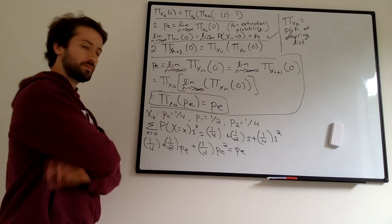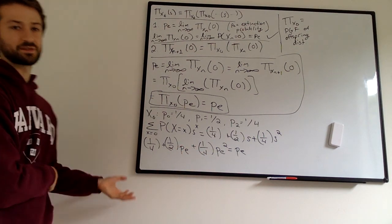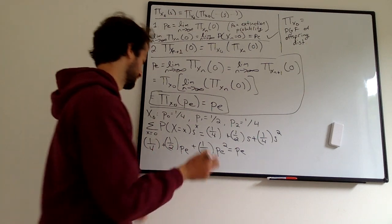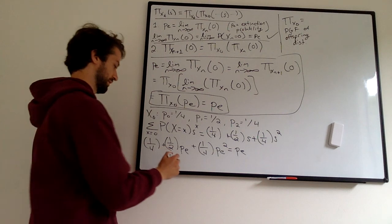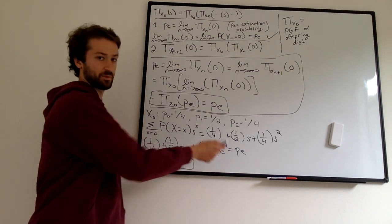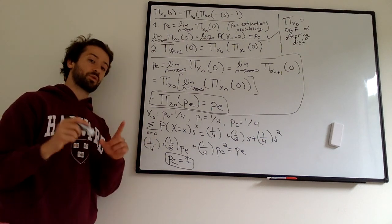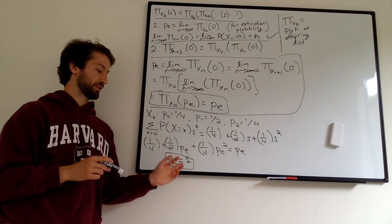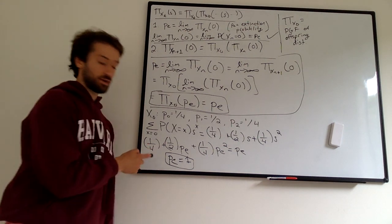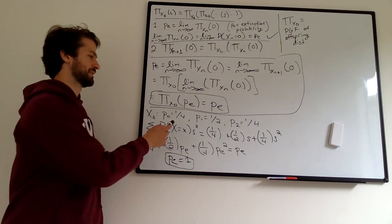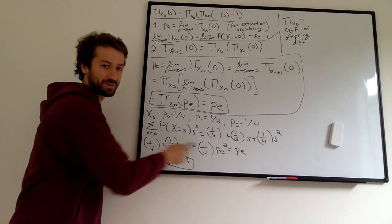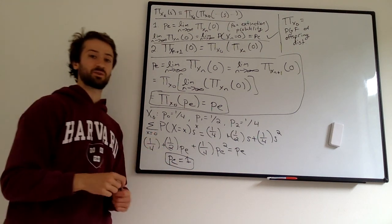Now we use our result: setting PGF(P sub E) equal to P sub E. Plugging P sub E in for s: one-quarter plus one-half P sub E plus one-quarter P sub E squared equals P sub E. Moving things to one side and applying the quadratic formula — this isn't an algebra class so we'll state the answer — we get P sub E equals 1. In fact both solutions are 1. You can verify: one-quarter plus one-half plus one-quarter equals 1, so plugging in 1 works. If you ever get two different solutions, P sub E is always the smaller one — that's proven in the linked chapter.